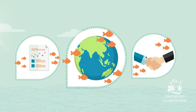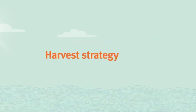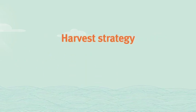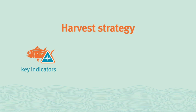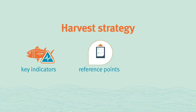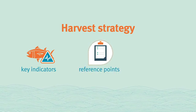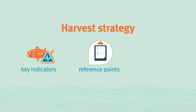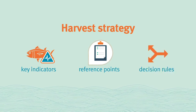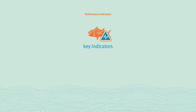Harvest strategies are used all over the world. All harvest strategies include the same basic elements: key indicators to assess the fishery's health, specific benchmarks or reference points that outline where we want the fishery to be and where we don't want it to be, and decision rules that trigger pre-agreed management actions.